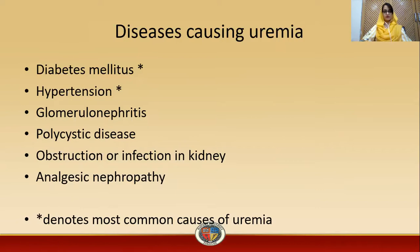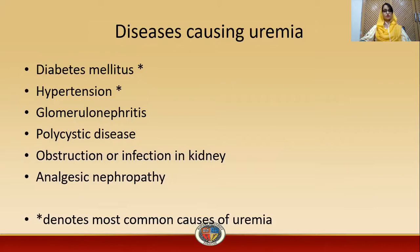In glomerulonephritis, the glomerular vessels found in the Bowman's capsule of the nephron are inflamed, leading to uremia. In polycystic disease, multiple cysts are found on the kidney, which lead to uremia. Obstruction may be due to kidney stones that accumulate in the vessels and lead to infection. In analgesic nephropathy, the nephrons get affected by excessive use of analgesics, usually NSAIDs.